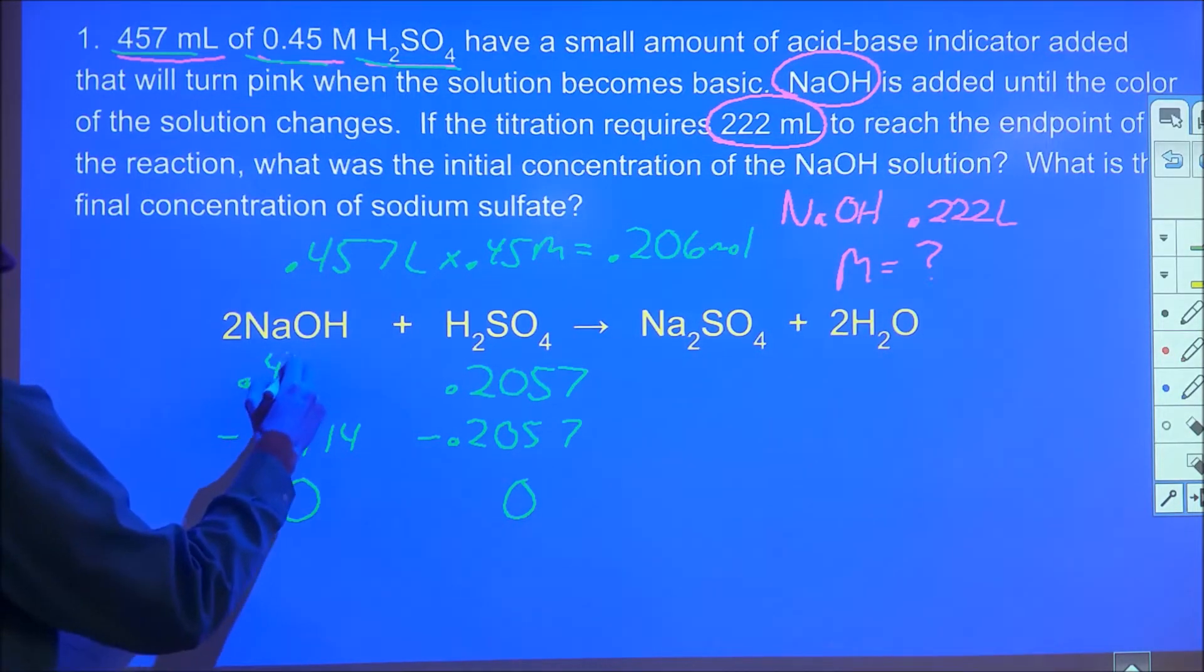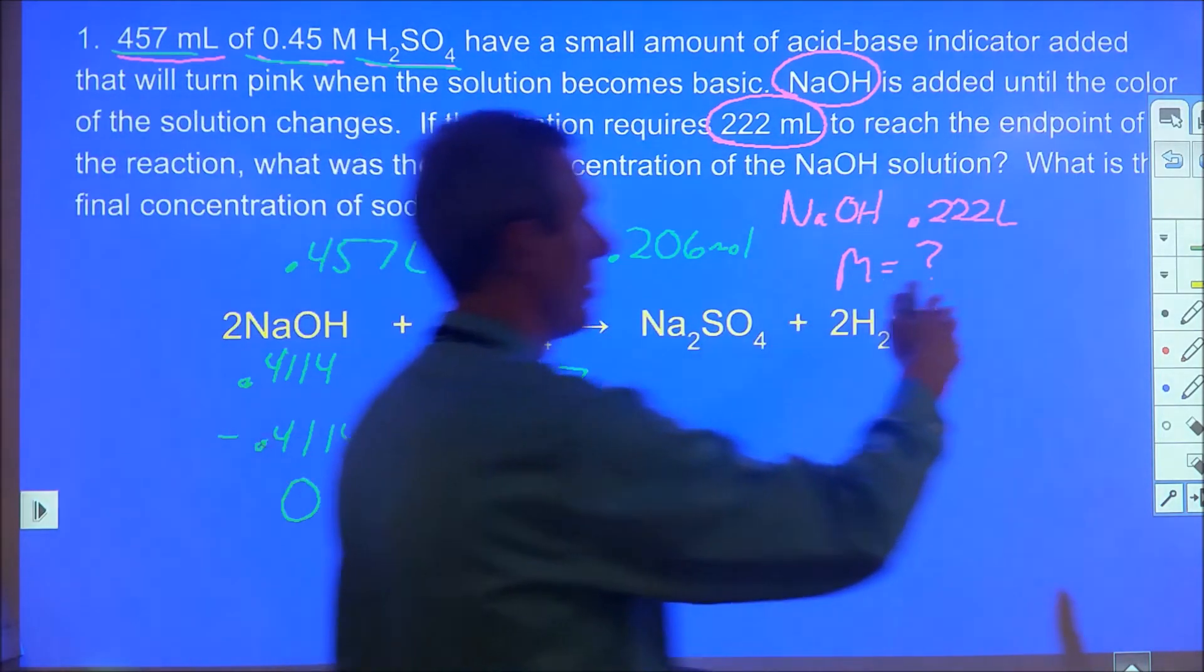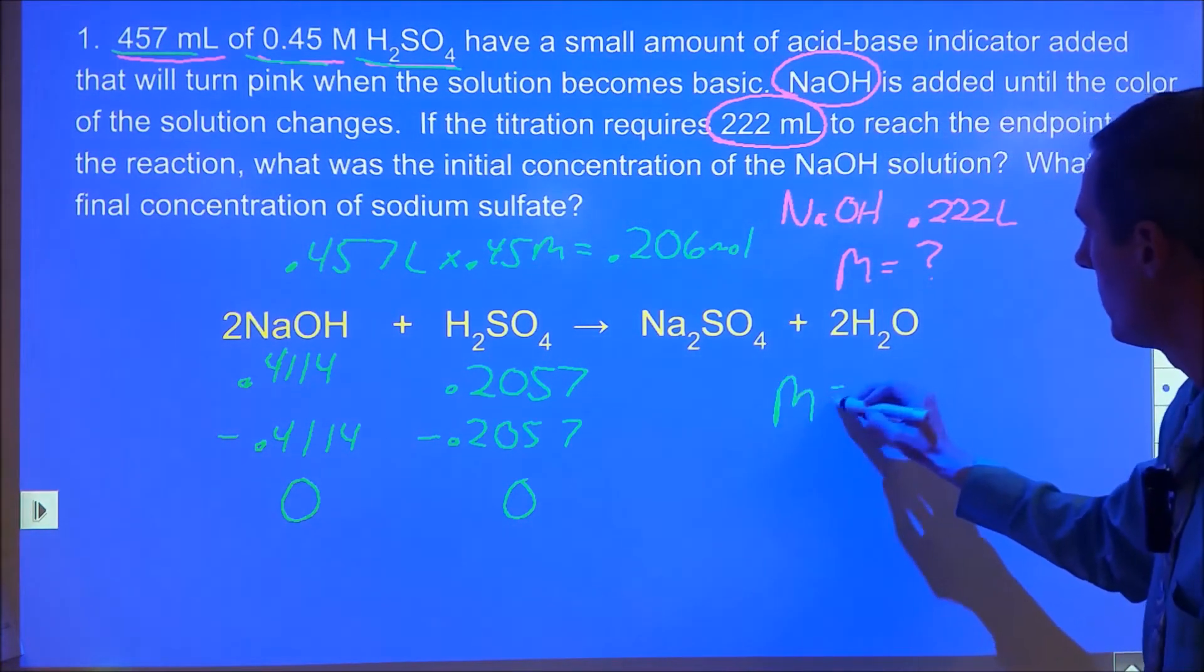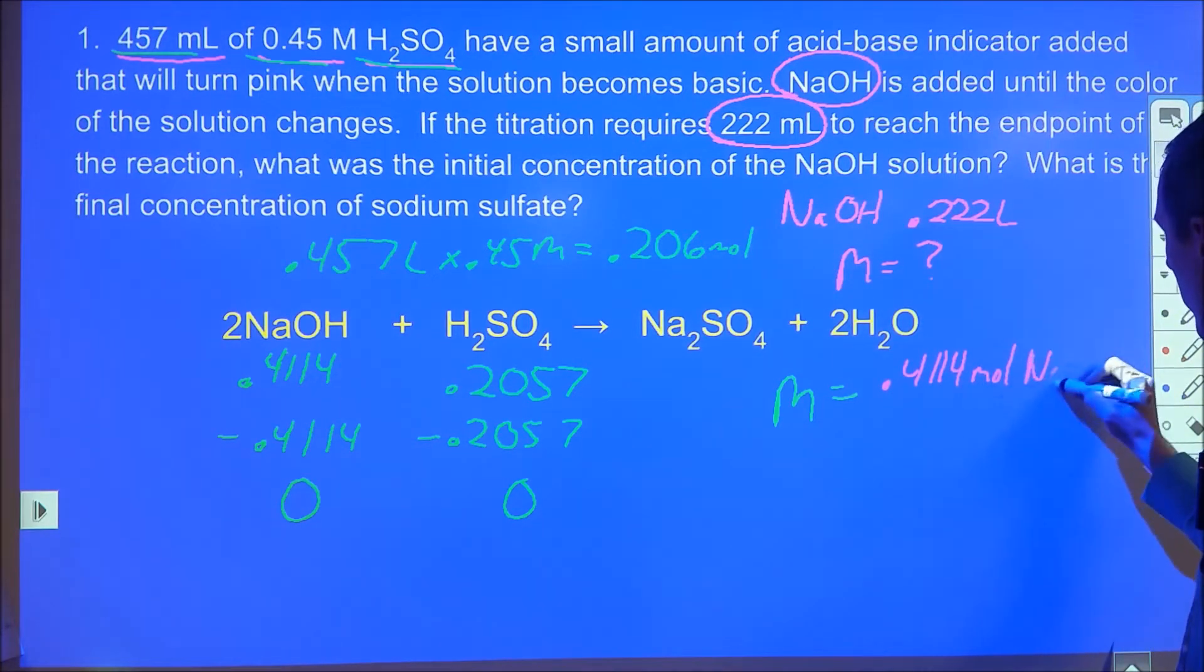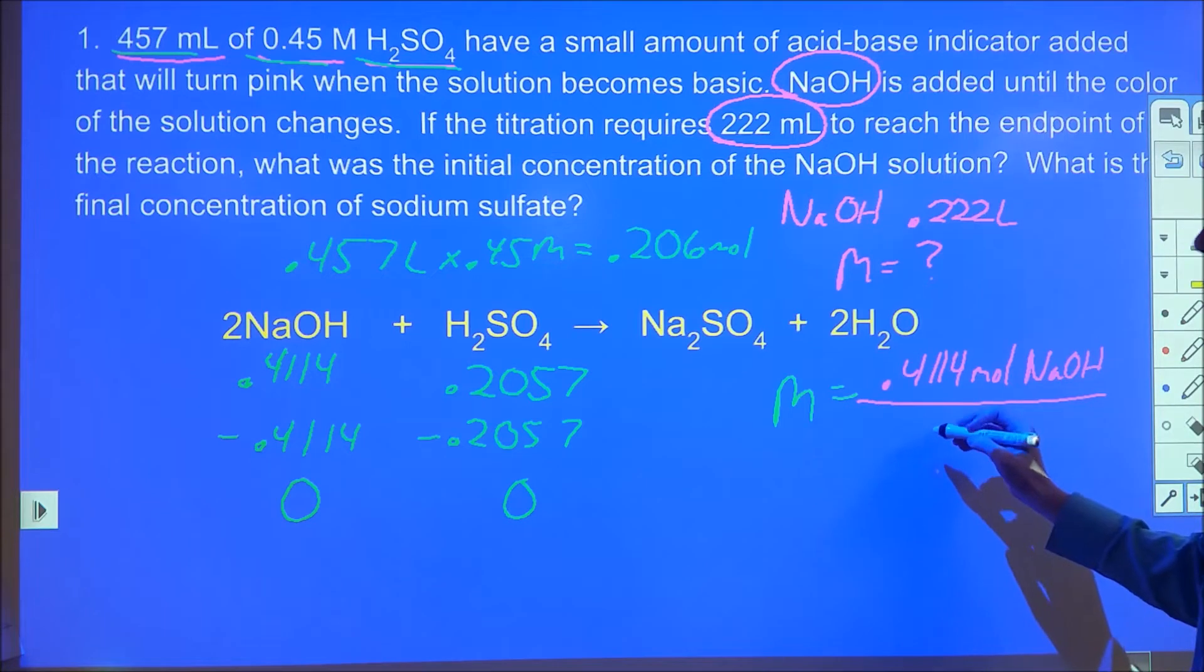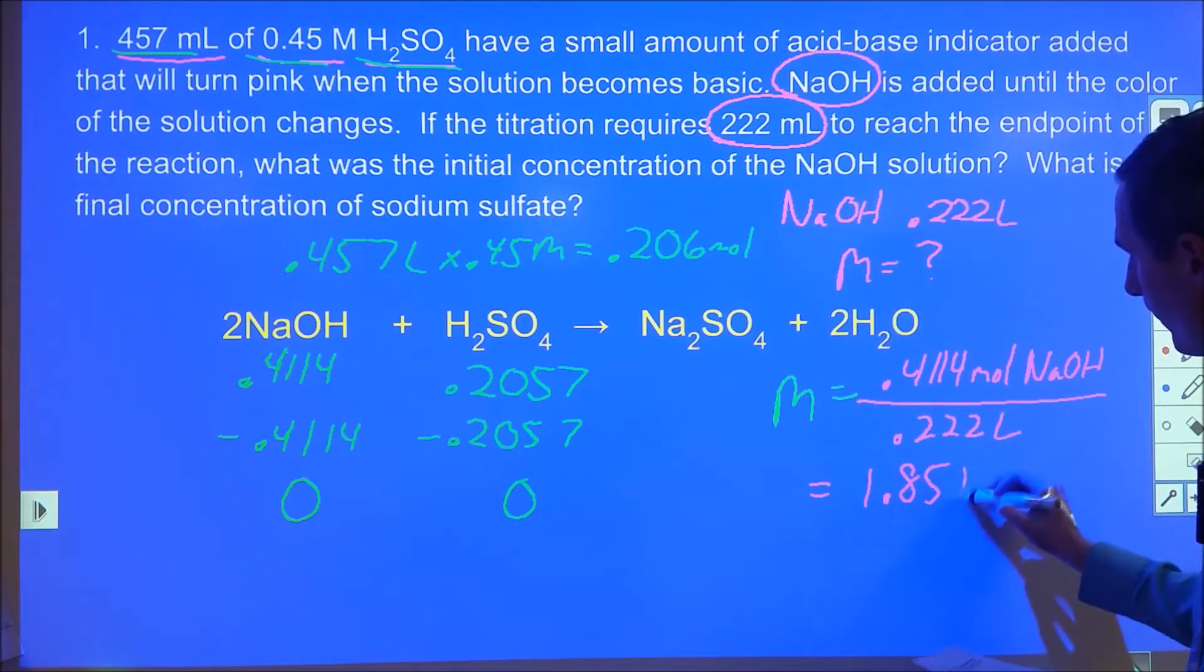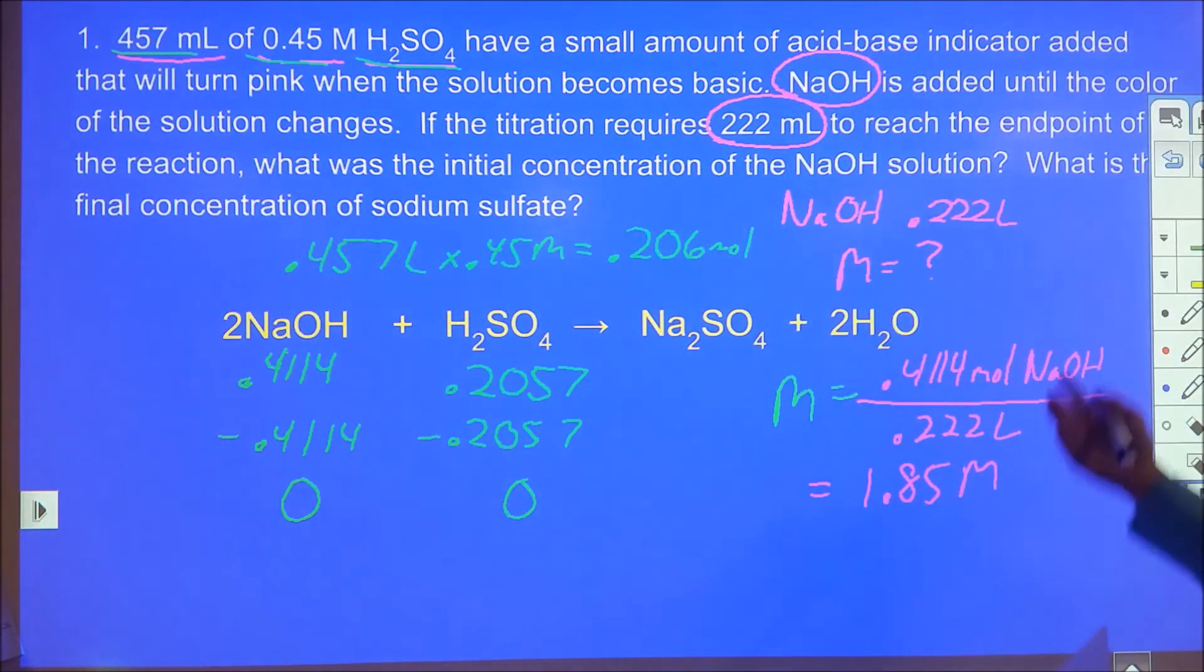Now we know how many moles of sodium hydroxide were in 0.222 liters, so we can figure out the concentration. The molarity equals 0.4114 moles of NaOH divided by 0.222 liters, giving us a concentration of 1.85 molar. The stoichiometry links in here with concentration analysis to do the full problem.